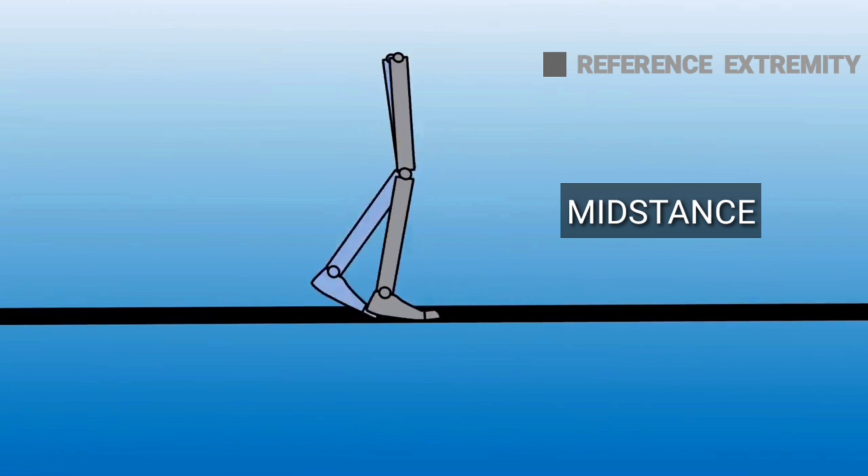Following foot flat is mid stance. Mid stance is the phase where our entire body weight is on the supporting extremity, that is the right extremity. This mid stance occurs at 30 percent of the gait cycle.